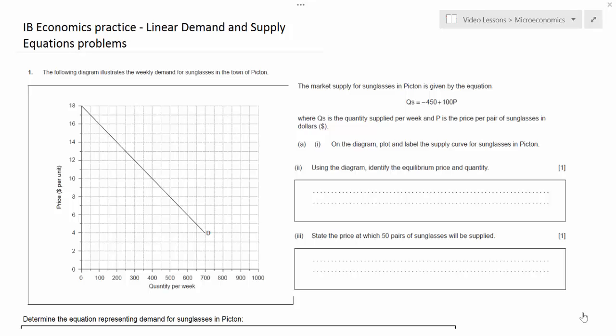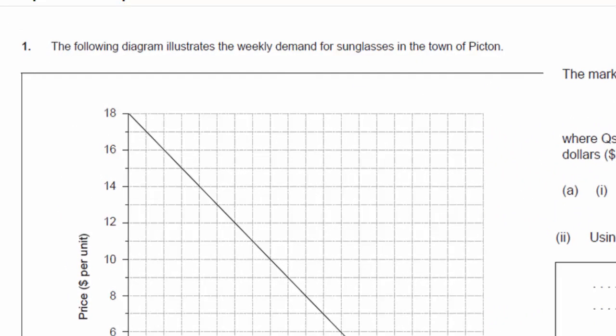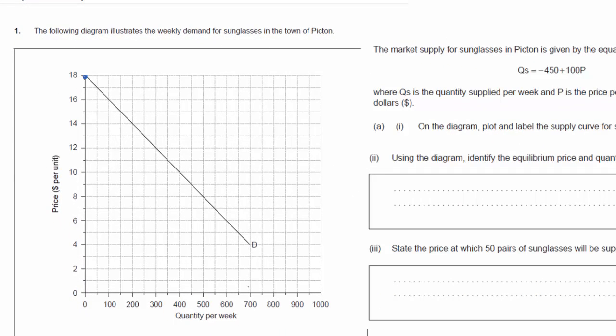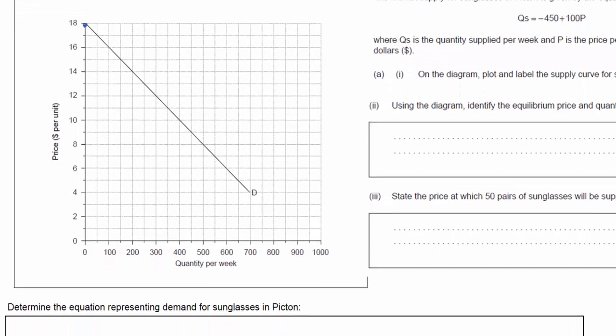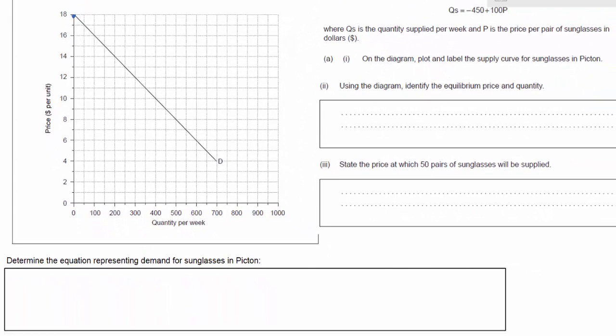So let's look at the first question. We've got a graph that's given to us. The introduction says the following diagram illustrates the weekly demand for sunglasses in the town of Picton. Study the graph for a moment and then we'll look at the first problem relating to this graph. We're going to have to use some points on this graph. Determine the equation representing demand for sunglasses in Picton. So let's talk about how to solve this.